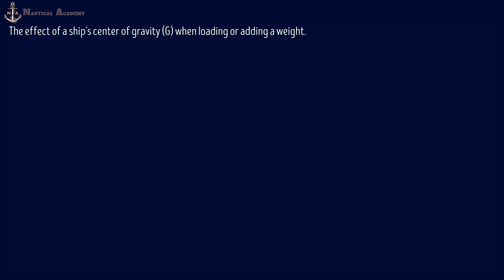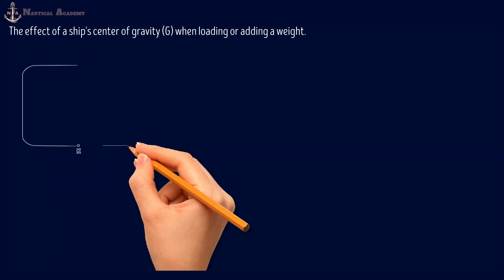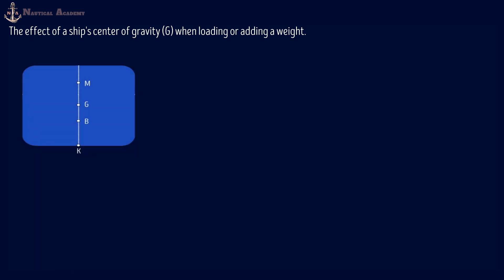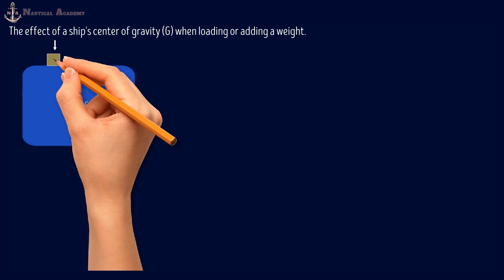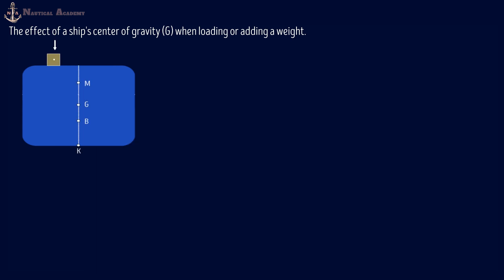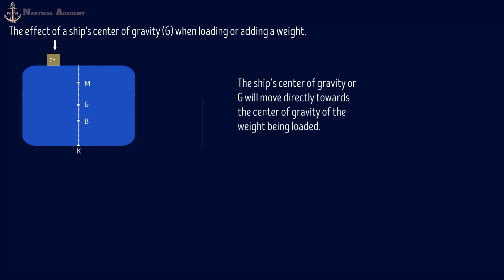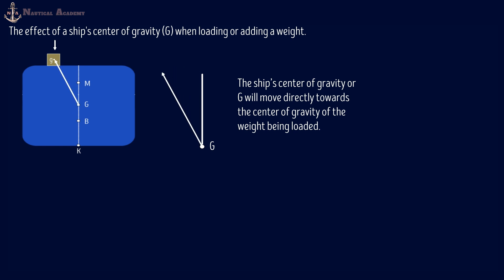Now for the effect of a ship's center of gravity when loading or adding a weight. If this is the ship's transverse section, and we assume that the ship's center of gravity will be here along the centerline — if a weight will be loaded on the main deck with a weight center of gravity marked as a dot and labeled small g — the ship's center of gravity G will move directly towards the center of gravity of the weight being loaded. The new ship's center of gravity is marked G1.